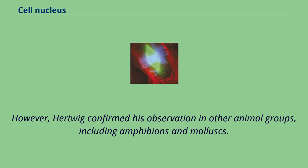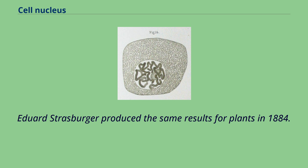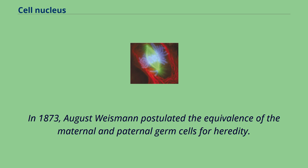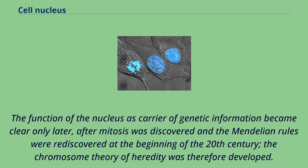This paved the way to assign the nucleus an important role in heredity. In 1873, August Weismann postulated the equivalence of the maternal and paternal germ cells for heredity. The function of the nucleus as carrier of genetic information became clear only later, after mitosis was discovered and the Mendelian rules were rediscovered at the beginning of the 20th century. The chromosome theory of heredity was therefore developed.